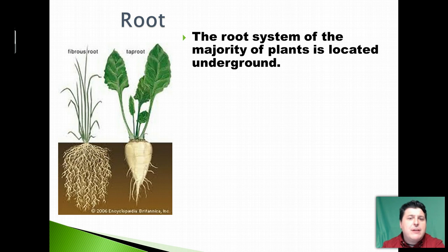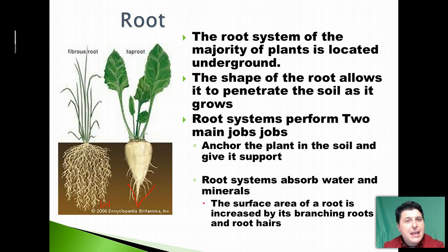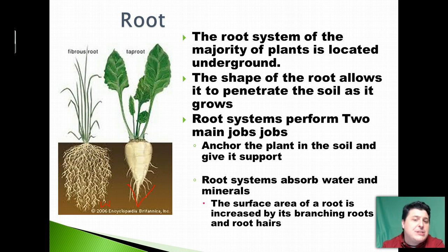The majority of the root system is located underground. The shape of the root, especially at the tips, takes on a triangular shape, which allows it to penetrate the soil as it grows. Roots have two main jobs: they anchor the plant so that it has support and won't blow over, and they absorb water and minerals.